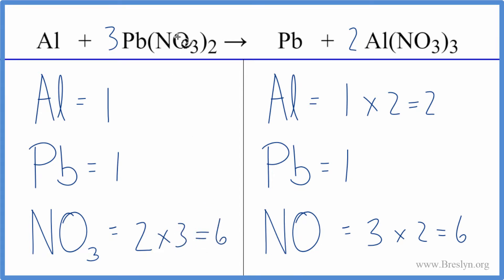So those are balanced, and I have one lead times the three. So now the leads aren't balanced. I have three leads. But that's not a problem. The lead's all by itself. If I put a three here, one times three, the lead's balanced.